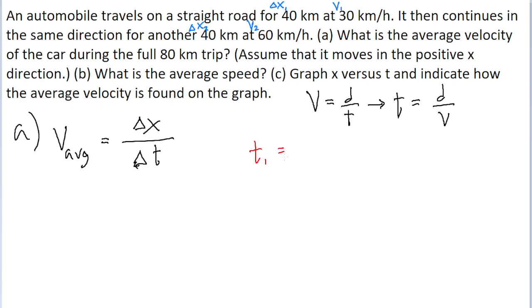Let's start with t sub 1 for the first part of the journey. That is distance divided by speed, so that is 40 kilometers for that first half of the trip, divided by the speed for that first section, which is 30 kilometers per hour. If you put that into a calculator, we find a time of about 1.33 hours.